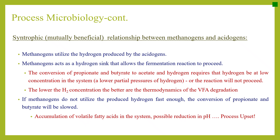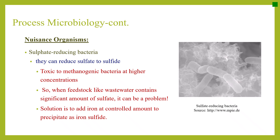If methanogens do not utilize the produced hydrogen fast enough, the conversion of propionate and butyrate will be slowed. As a result, accumulation of volatile fatty acids in the system may reduce the pH, and since methanogens are sensitive to pH, there will be a process upset. Additionally, sulfate-reducing bacteria are considered nuisance organisms in the process. They can reduce sulfate to sulfide, which is toxic to methanogenic bacteria at higher concentrations. When feedstock like wastewater contains a significant amount of sulfate, the solution is to add iron in controlled amounts to precipitate it as iron sulfide.